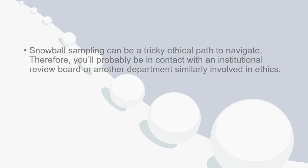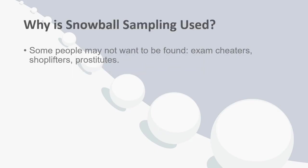Snowball sampling can be a tricky ethical path to navigate. You'll want to be in contact with an institutional review board or another department similarly involved in ethics. It's used because some people just may not want to be found. For example, if a study was investigating cheating on exams, shoplifting, drug use, prostitution, or another kind of unacceptable social behavior,